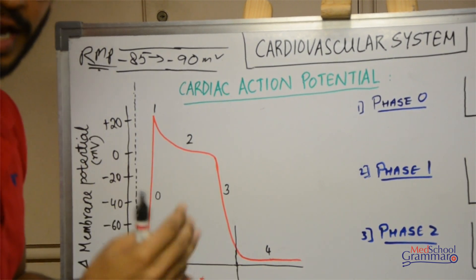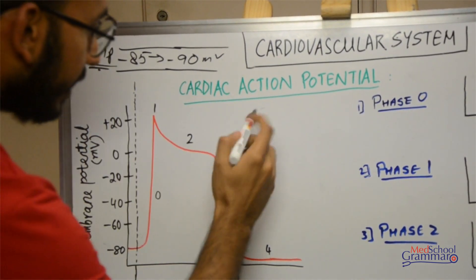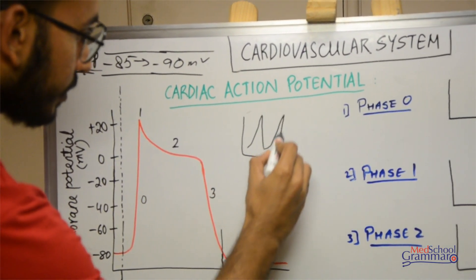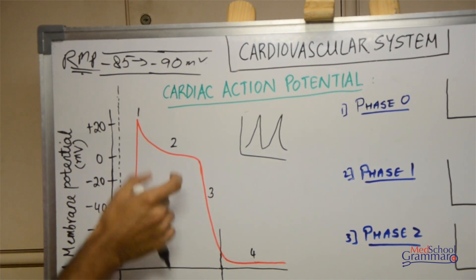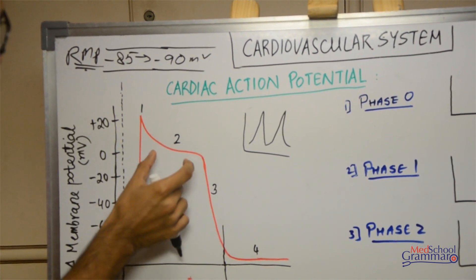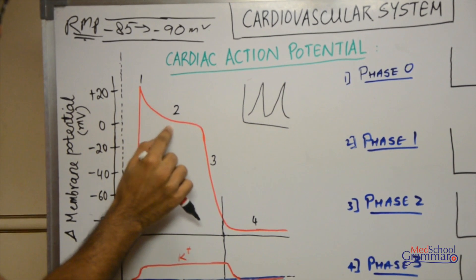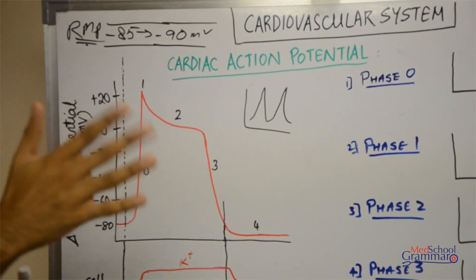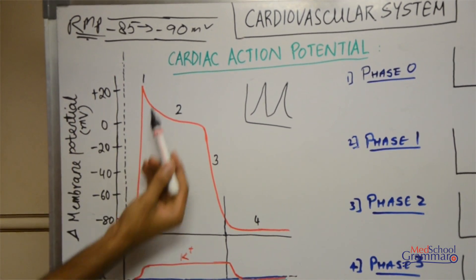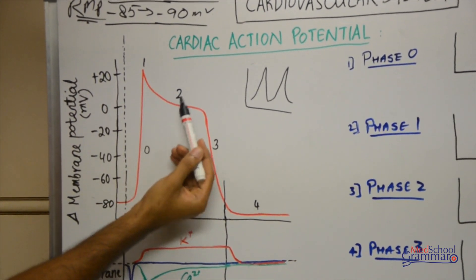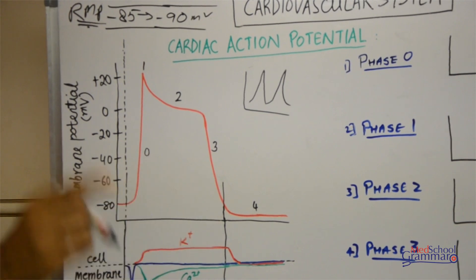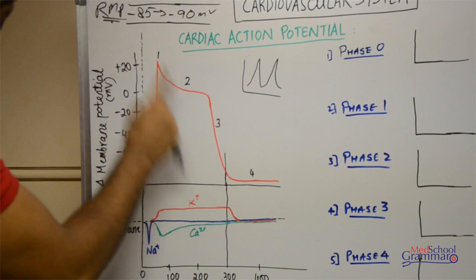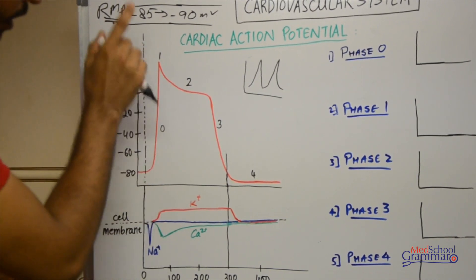In large myelinated nerve fibers the action potential curve has a different shape, but the cardiac action potential curve shows a characteristic plateau phase. Cardiac action potential is divided into five phases: phase 0, phase 1, phase 2, phase 3, and phase 4. This is how the action potential curve in a cardiac muscle looks like.